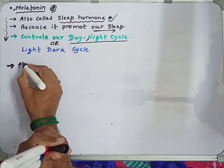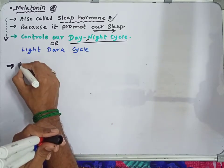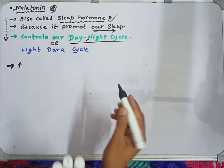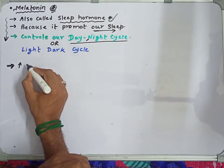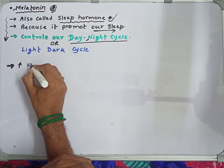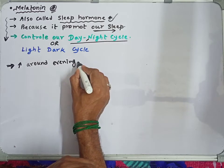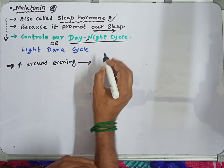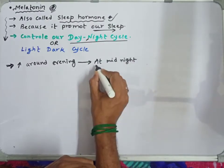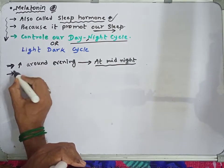The pineal gland starts to release melatonin in the evening period. When melatonin is released in the evening, we gradually feel the need to sleep. The secretion of melatonin increases around evening and reaches its peak level at midnight.